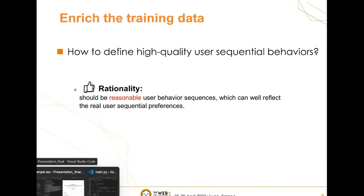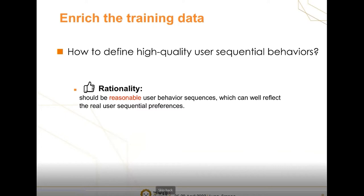Firstly, we should guarantee the rationality of the sequential data. The generated samples should be reasonable and can well reflect the real user sequential preferences.